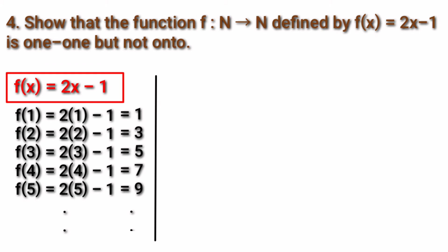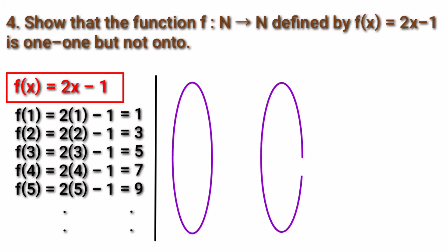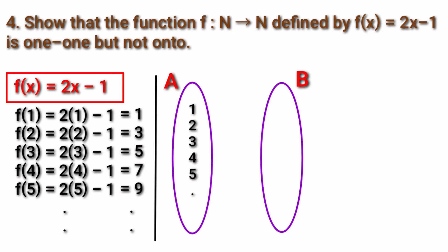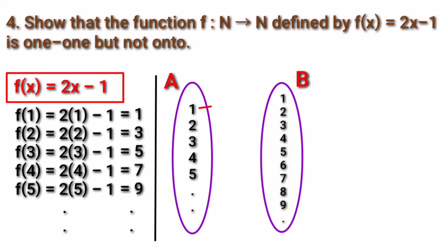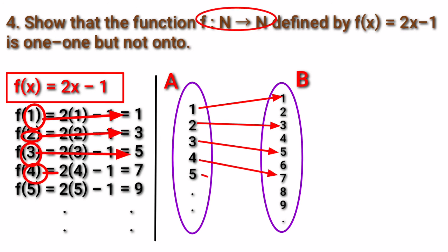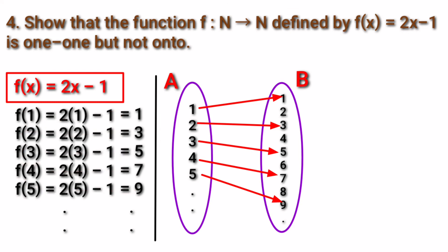To show that the function is one-one, we can draw an arrow diagram. Since f is from ℕ to ℕ, the domain and co-domain are the same natural numbers. We write 1, 2, 3, 4, 5, etc. in set A and the same in set B. When we substitute 1 for x the answer is 1, for 2 the answer is 3, for 3 the answer is 5, for 4 the answer is 7, and for 5 the answer is 9. For every element in A we got different images in B, so we can say that this is a one-one function.